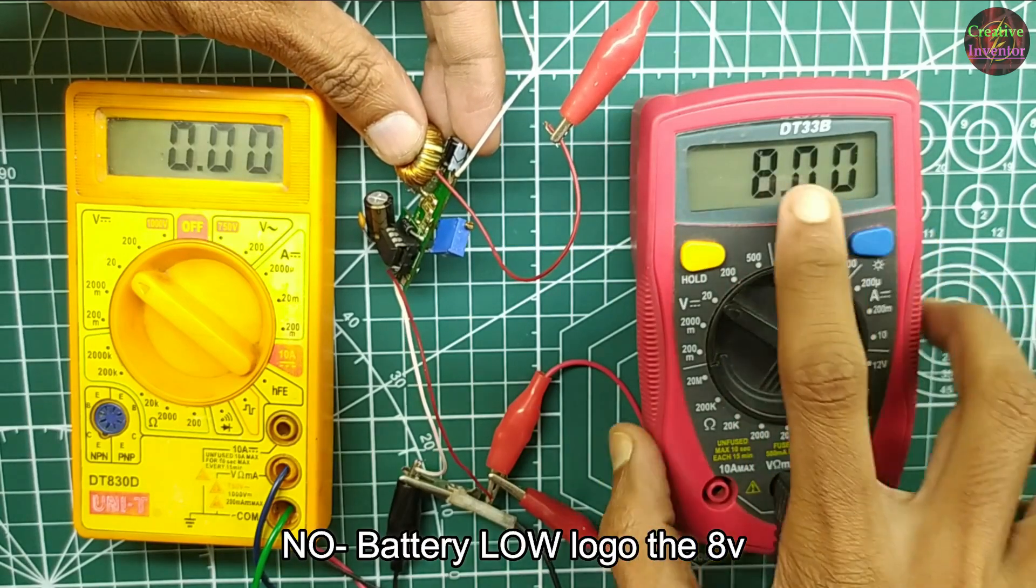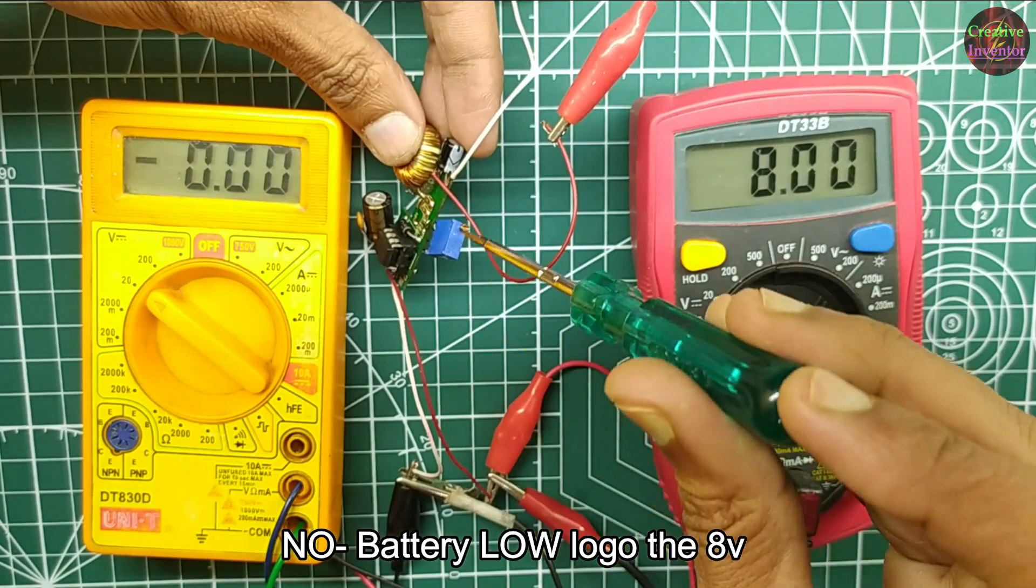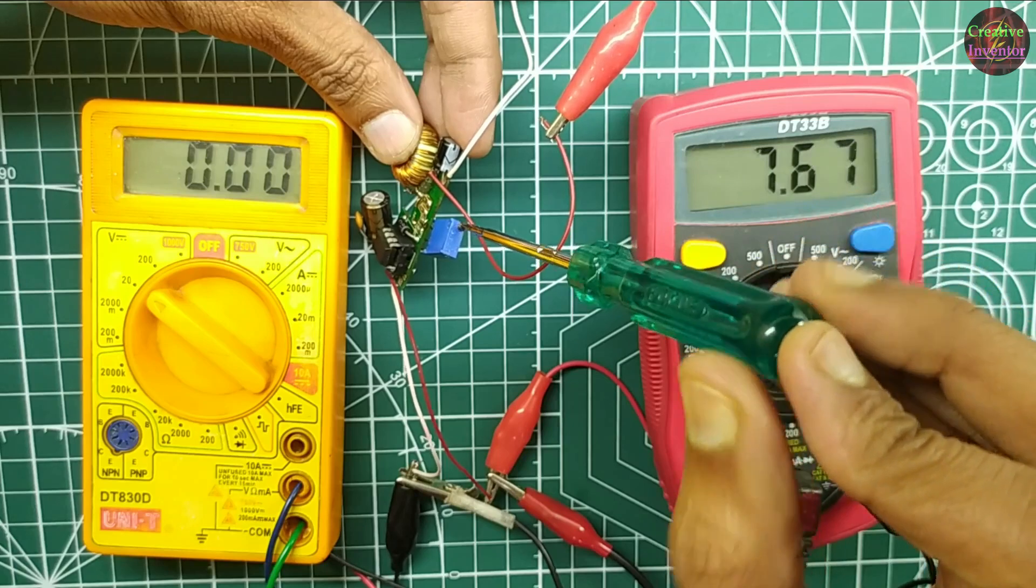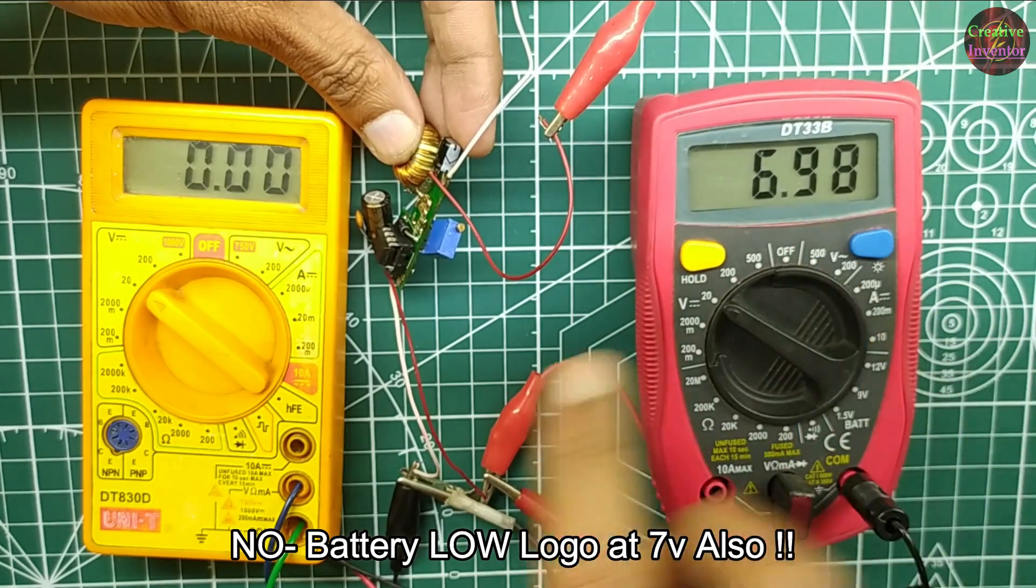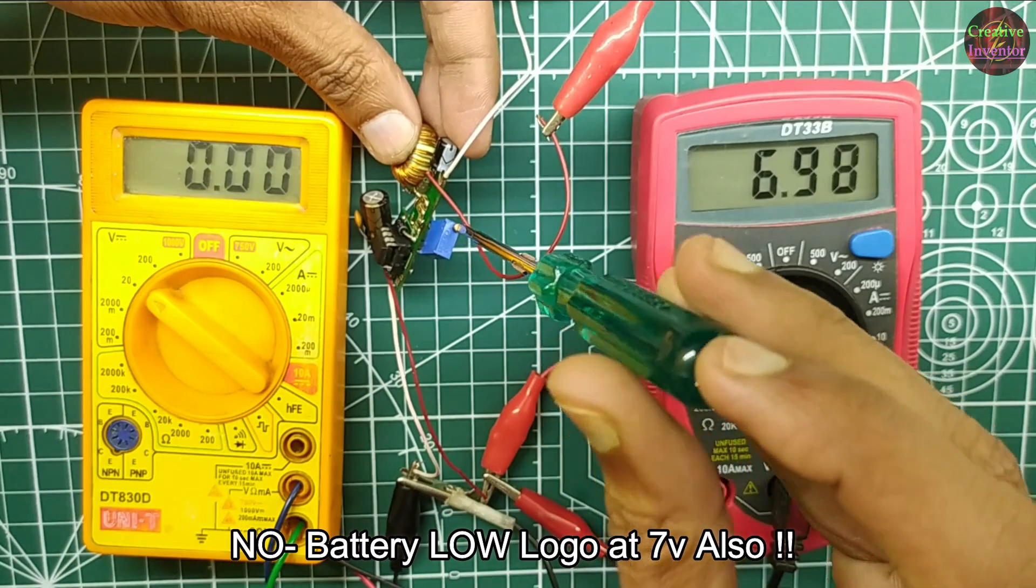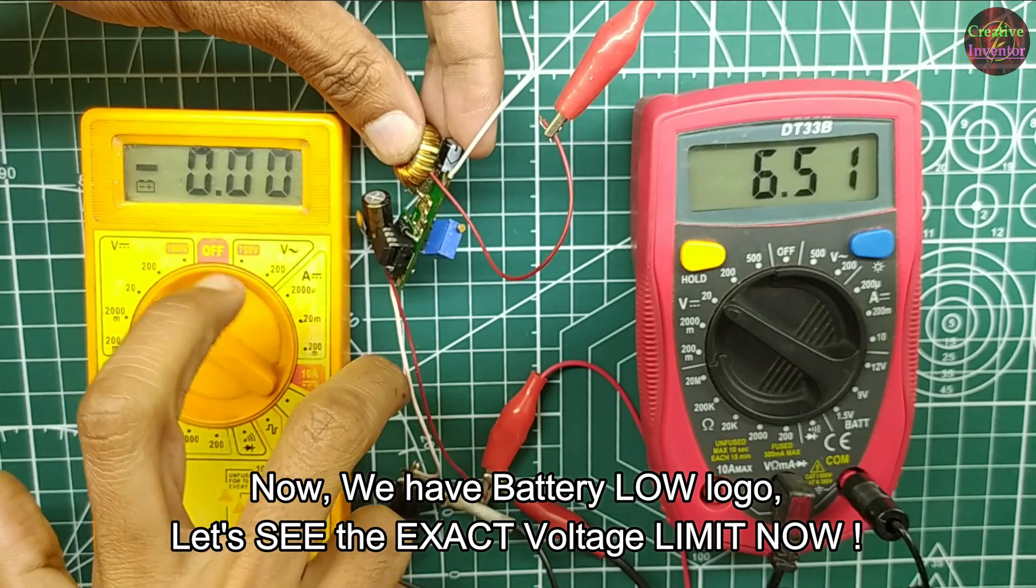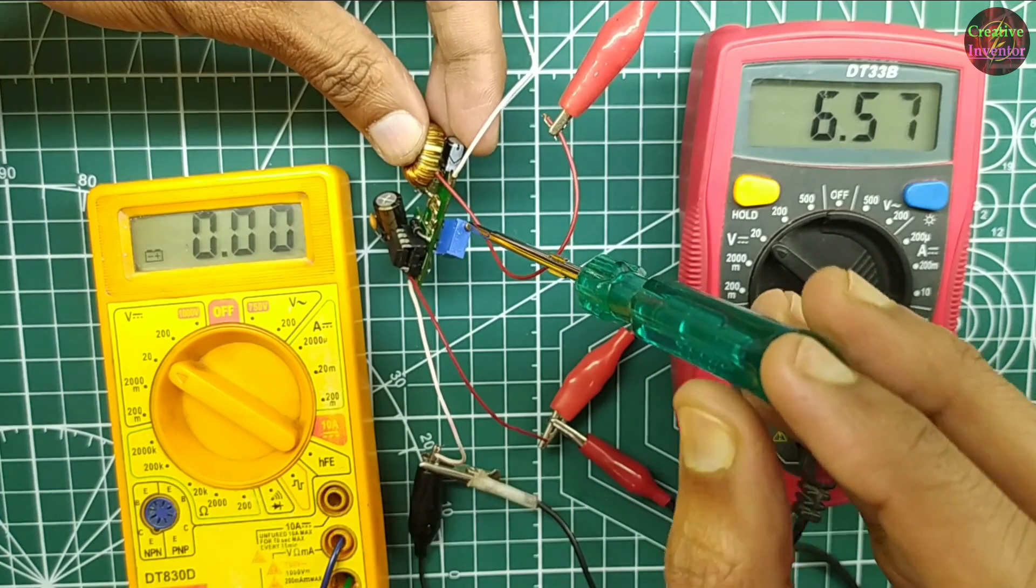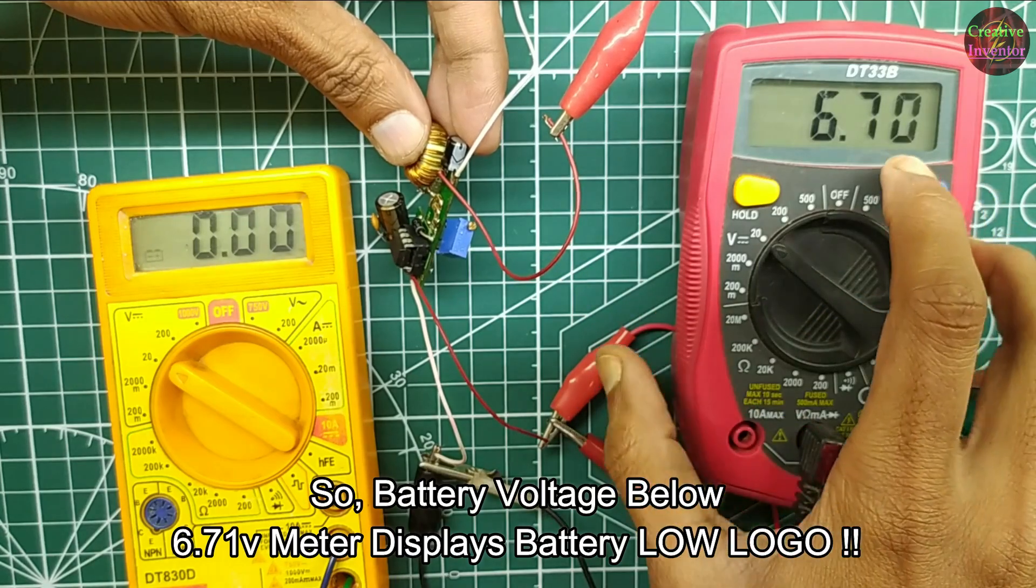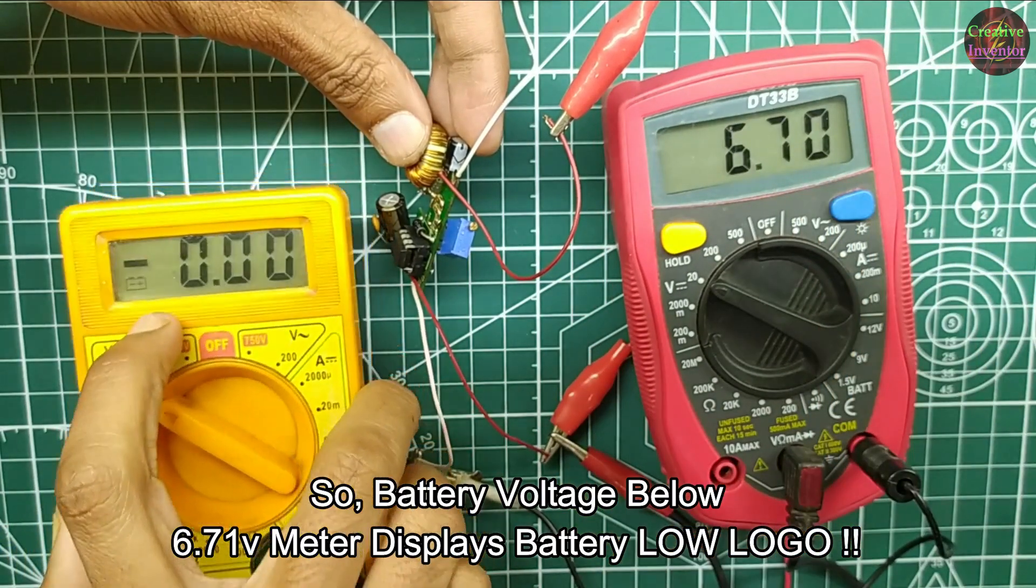No battery low logo at 8 volt. No battery low logo at 7 volt also. Now we have battery low logo. Let's see the exact voltage limit now. So battery voltage below 6.71 volt, meter displays battery low logo.